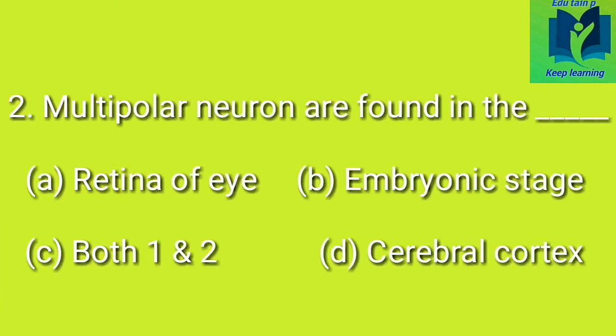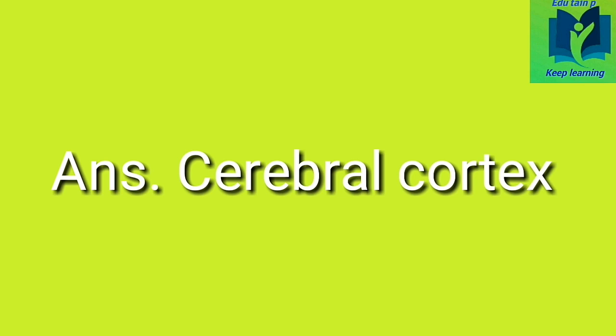Multipolar neurons are found in the dash. Option A: retina of eye. Option B: embryonic stage. Option C: both A and B. Option D: cerebral cortex. Answer: cerebral cortex.